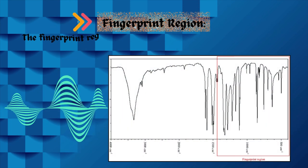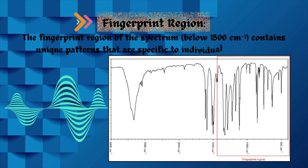Fingerprint region. The fingerprint region of the spectrum below 1,500 per centimeter contains unique patterns that are specific to individual compounds.